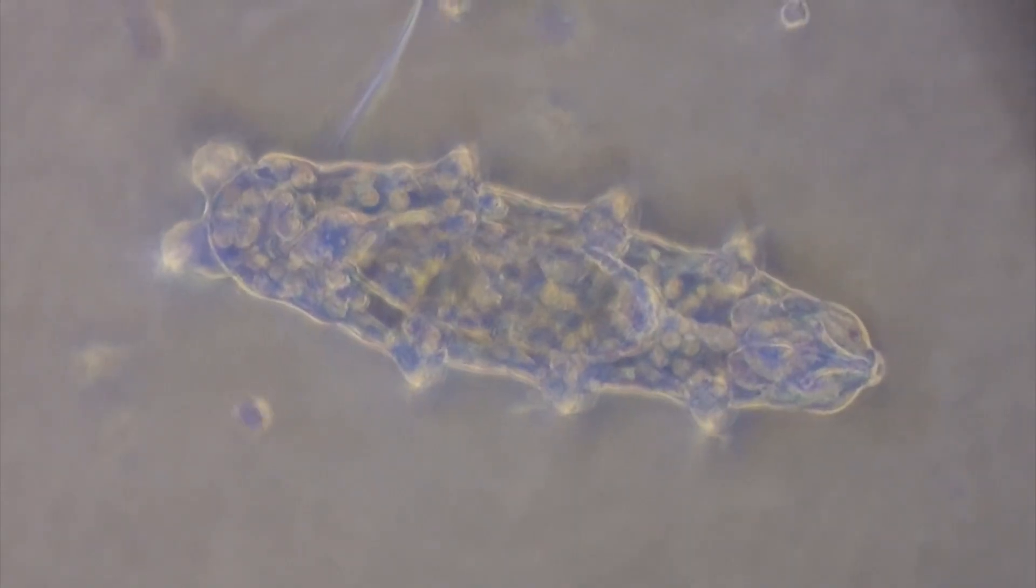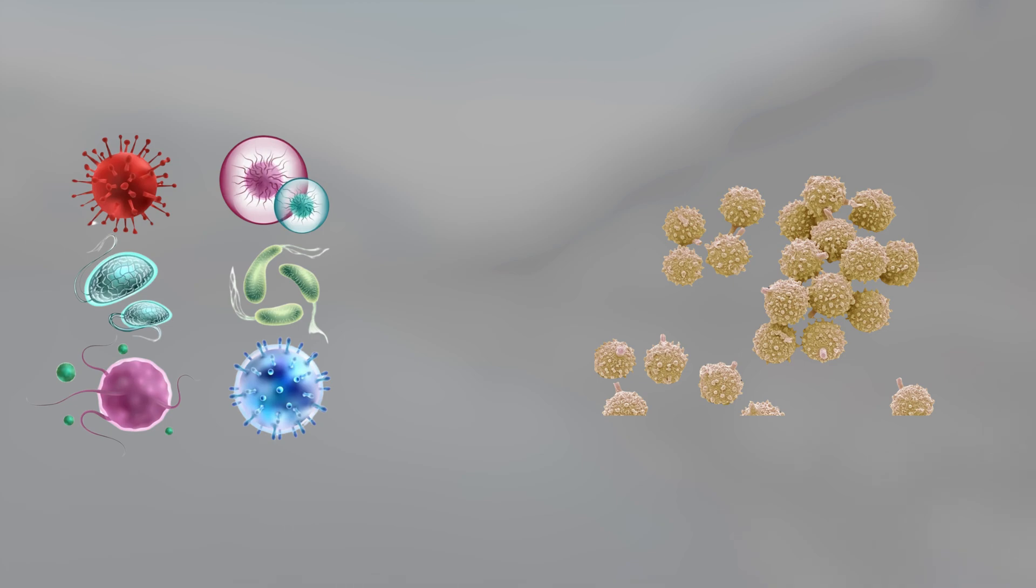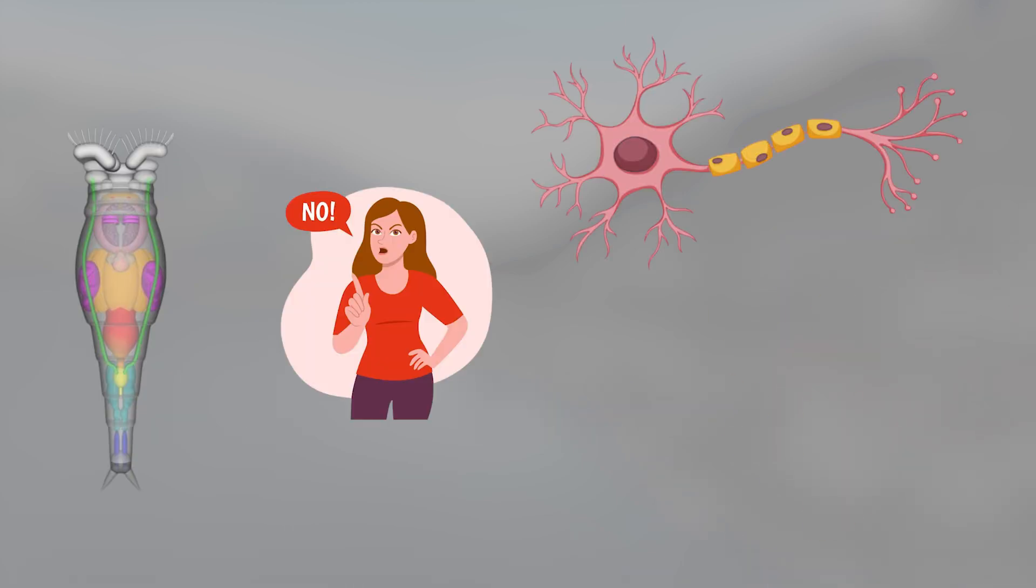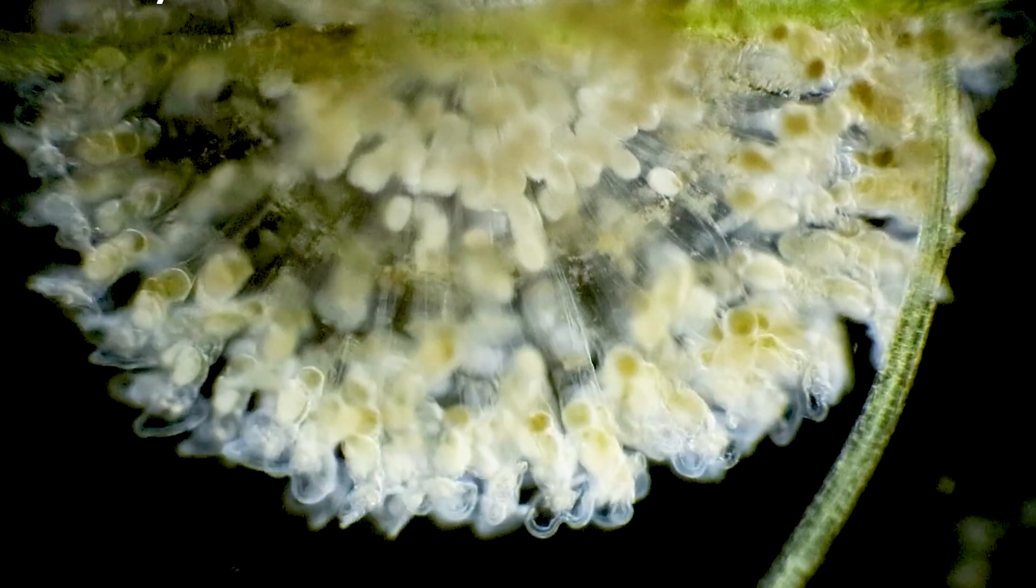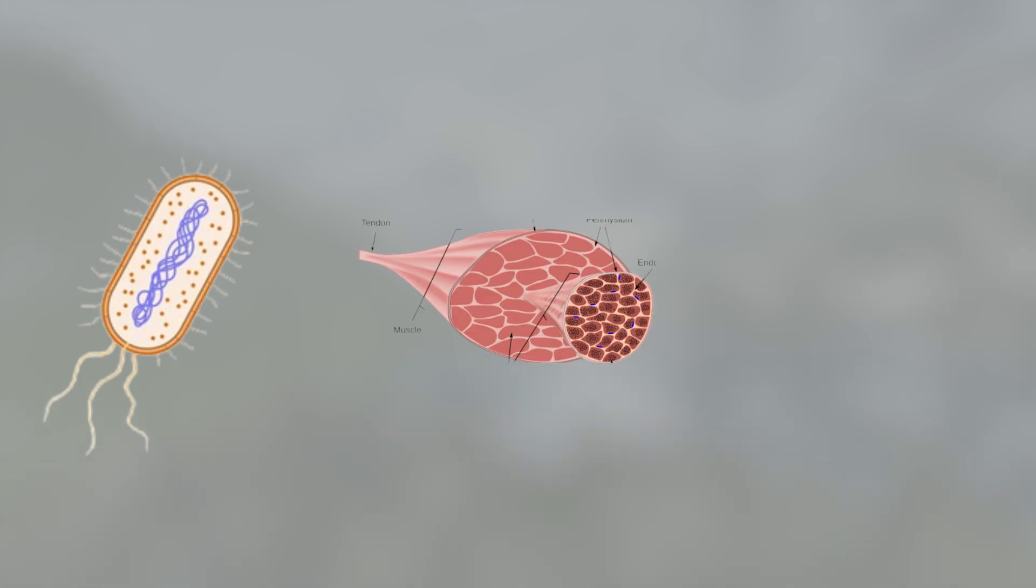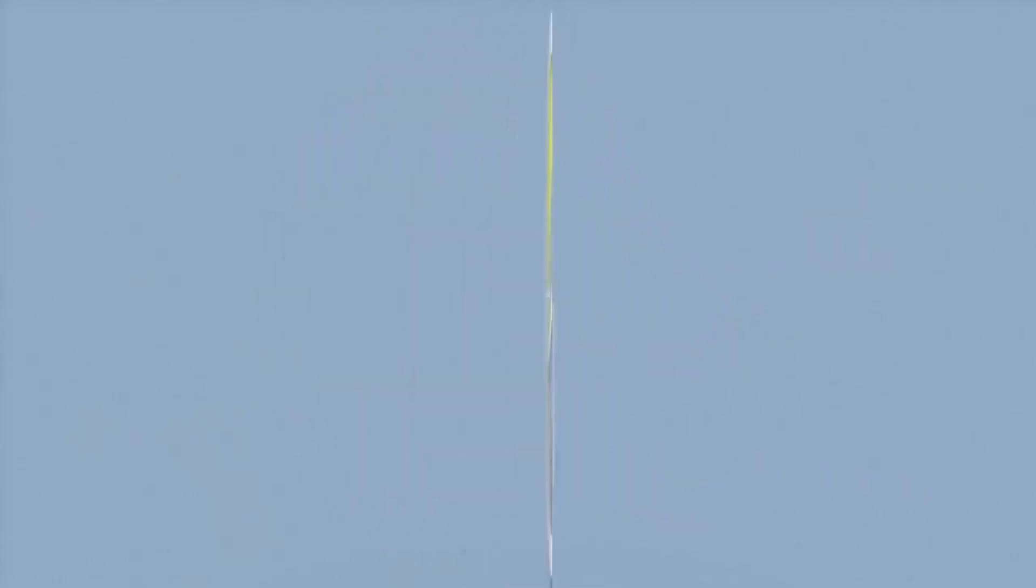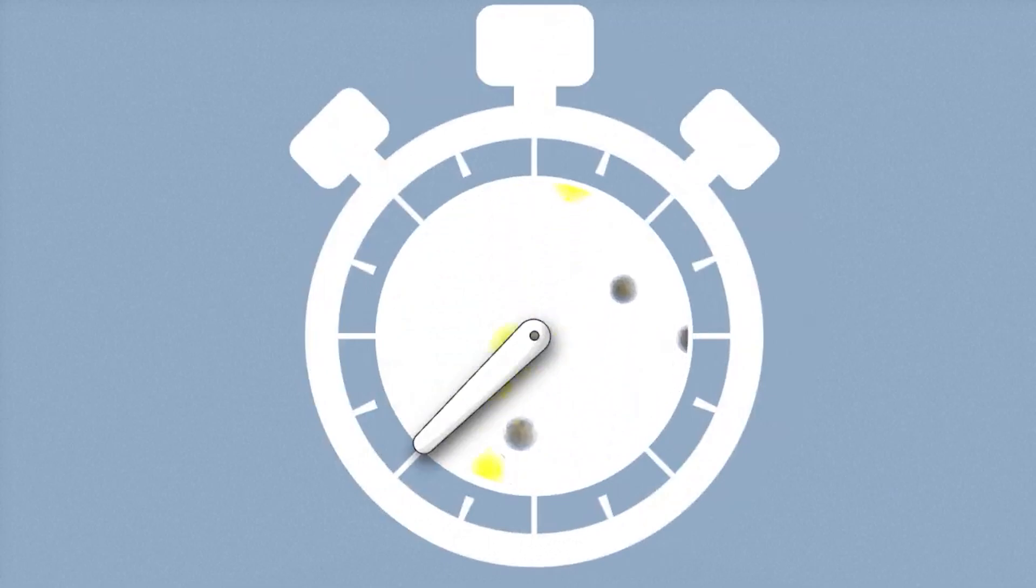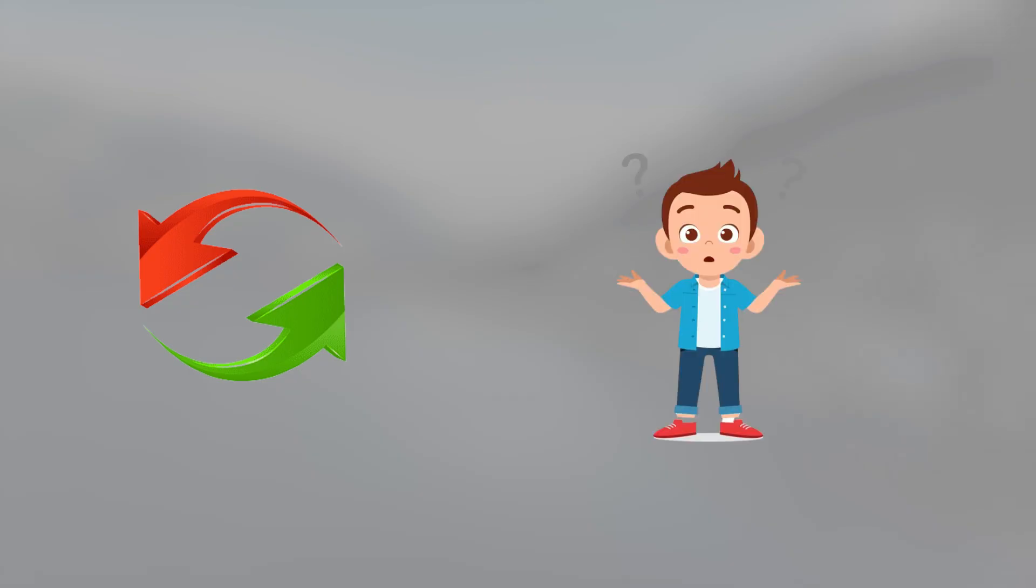Cryptobiosis, this biological shutdown, has mostly been seen in microbes and spores—simple organisms, no nerves, no organs. But rotifers are animals. They have systems, muscles, tissues, a nervous network. And yet, this one shut itself down for nearly 24,000 years, then rebooted like nothing happened.